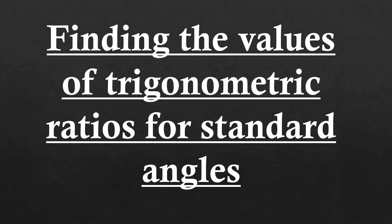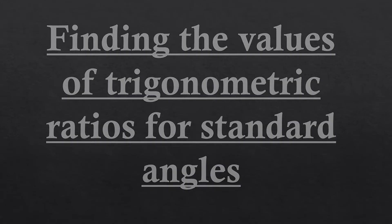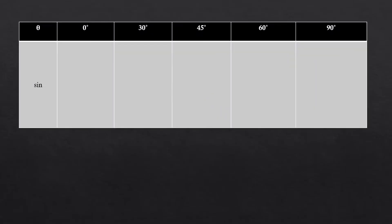Hello everyone. In this video I am going to teach you how you can find the values of trigonometric ratios for standard angles. In trigonometry, the standard angles are 0°, 30°, 45°, 60°, and 90°.